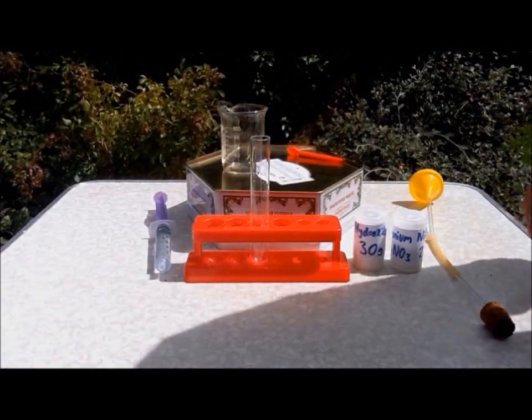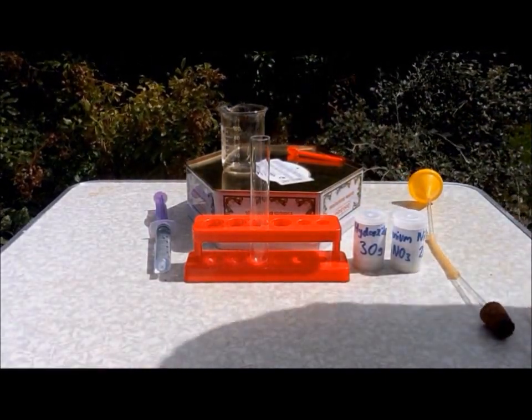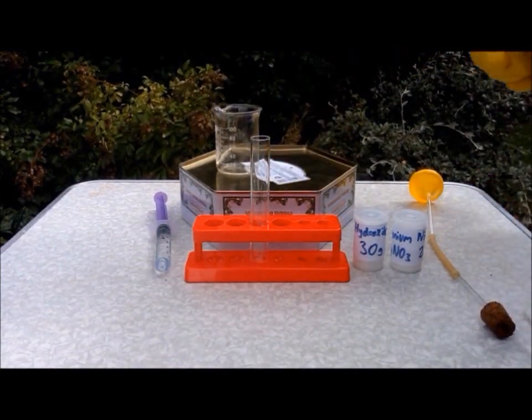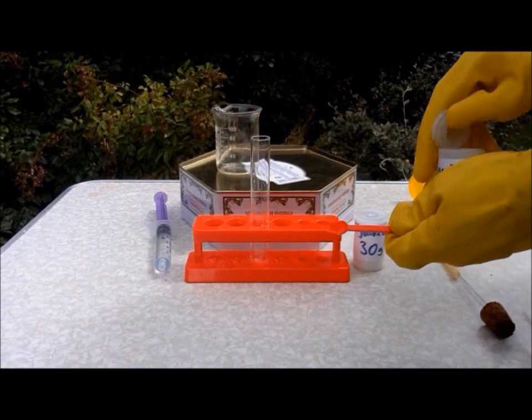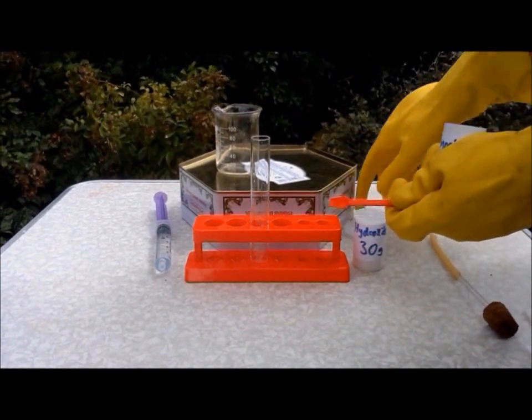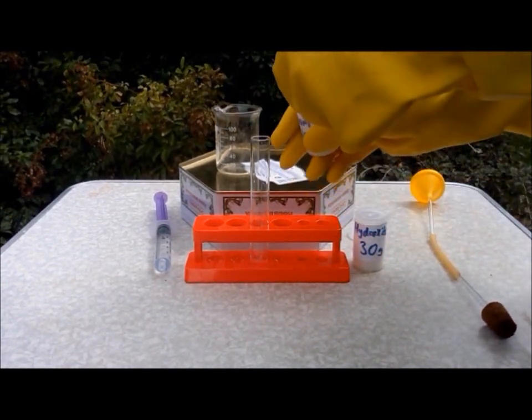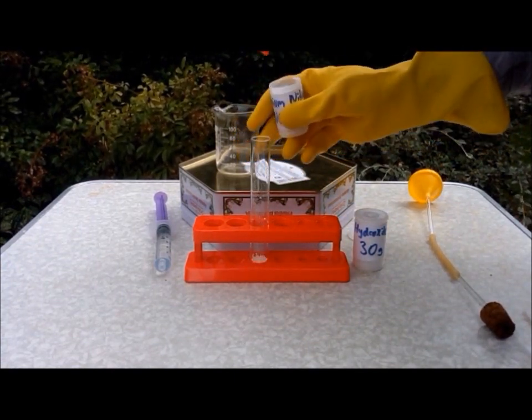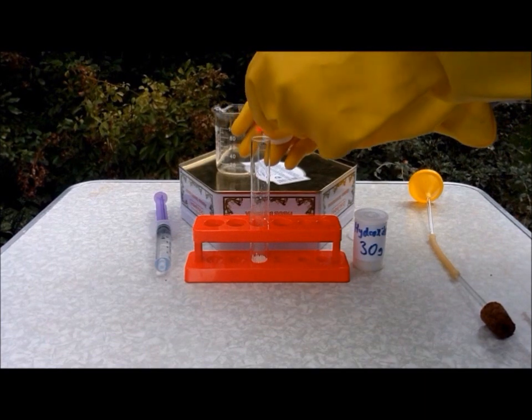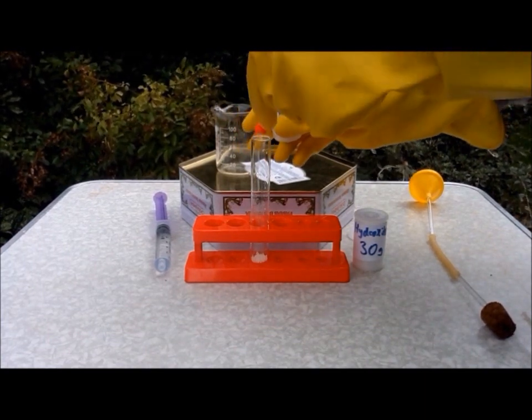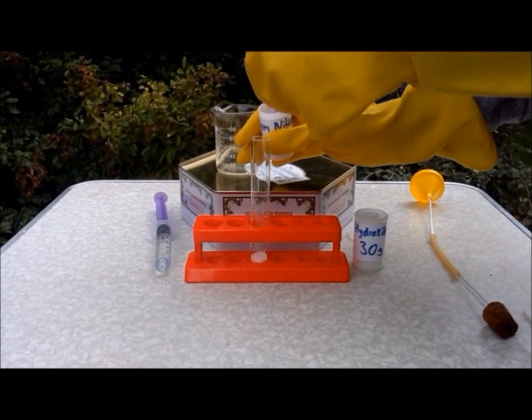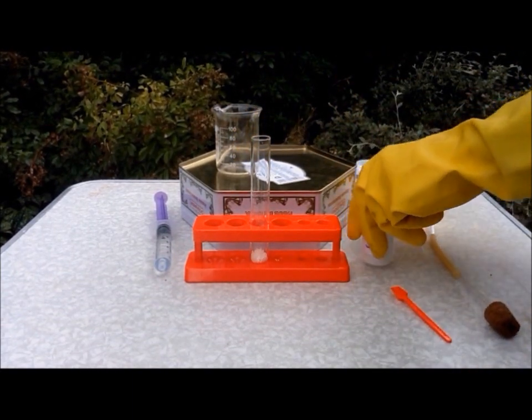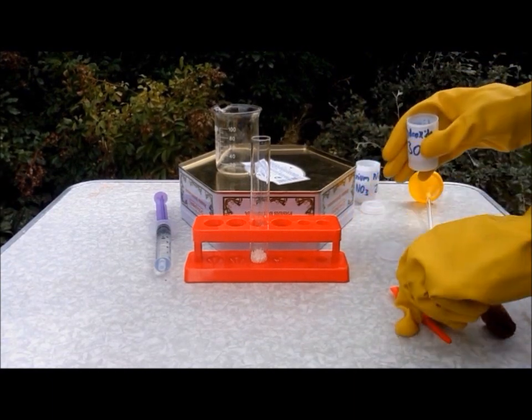You need to put gloves on here for the next part because this is when you handle the chemicals. So, then you want to get four spatulas of Ammonium Nitrate and two spatulas of Sodium Hydroxide.